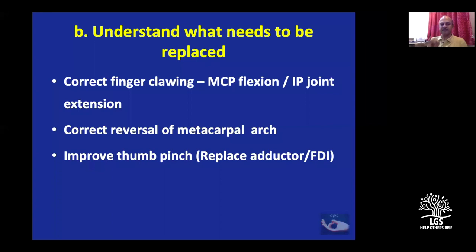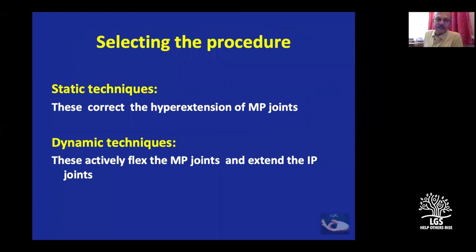To summarize the bare essentials of what we need to do in ulnar nerve palsy: first, correct the finger claw — MCP joint flexion and IP joint extension; second, correct the reversal of the metacarpal arch; third, improve thumb pinch by replacing the adductor and abductor of the index finger. These are our three aims. We then need to select the procedure — there are two types: static and dynamic.